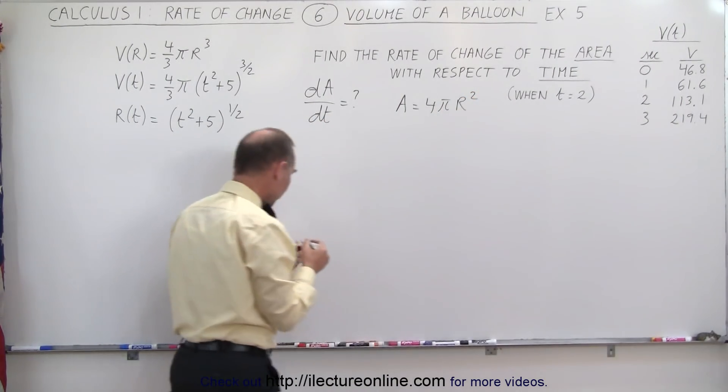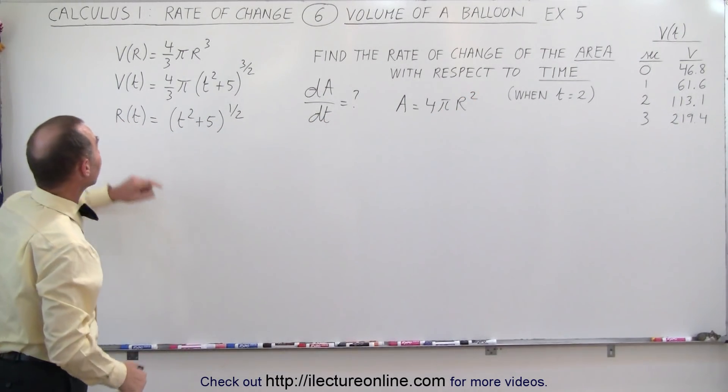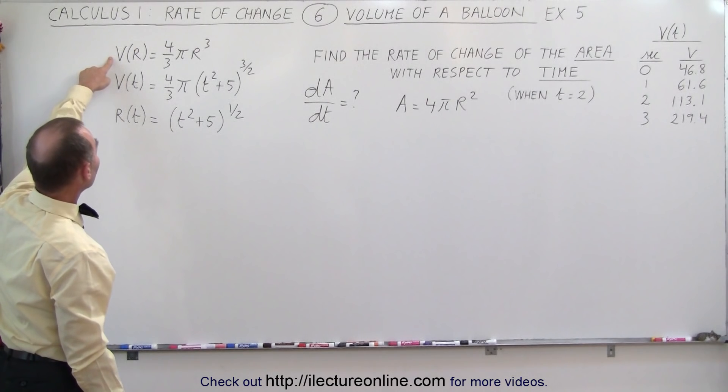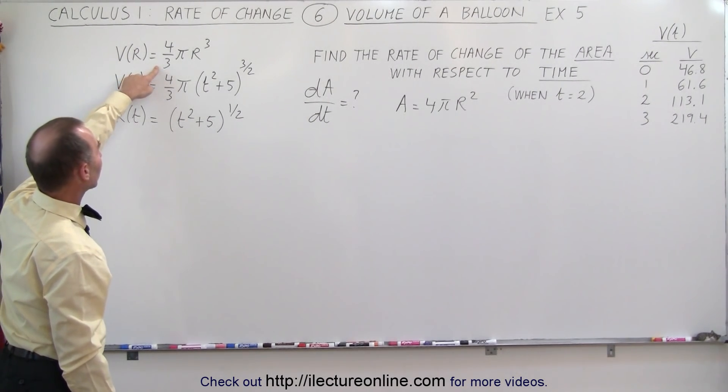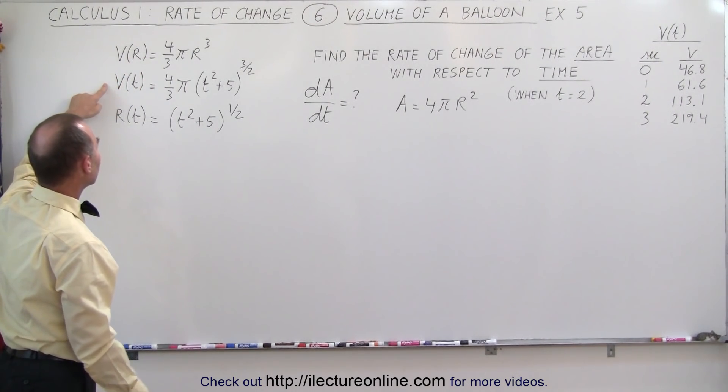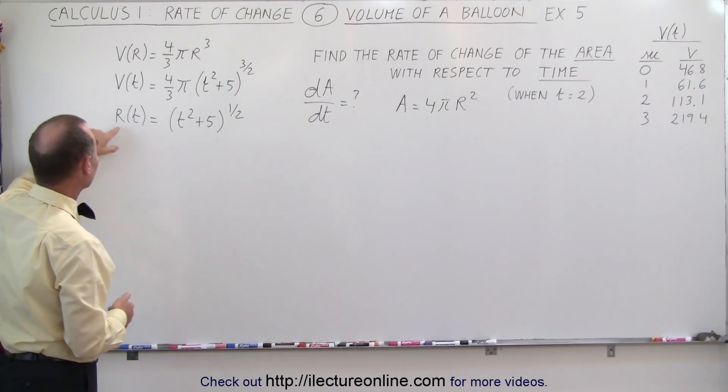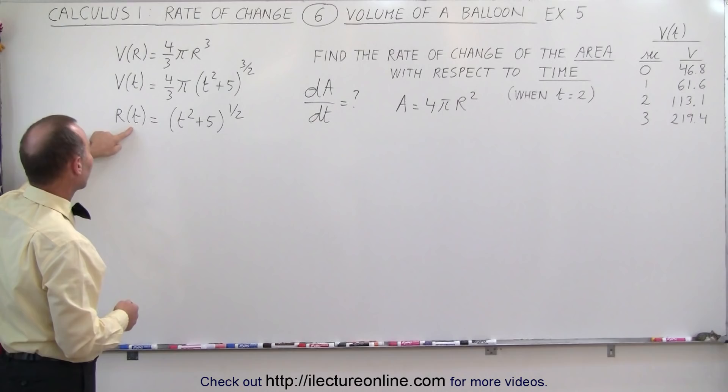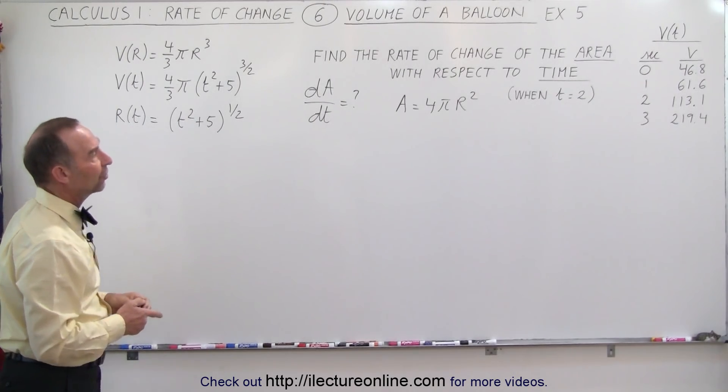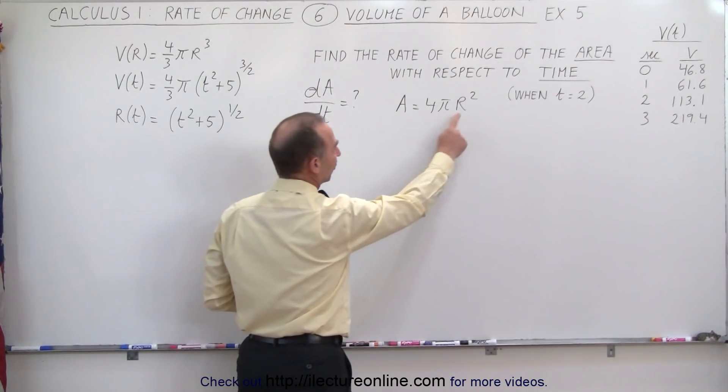Now, when we come over here, what we know so far is that the equation for the volume of a balloon is equal to 4/3πr³. We had an equation for the volume as a function of time, and in the previous video, we also found an equation for the radius as a function of time. Now, since the area is expressed in terms of the radius...